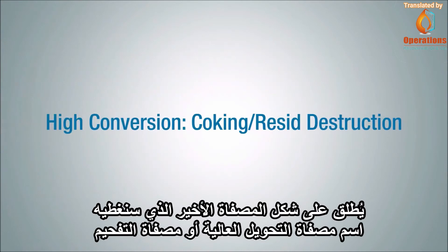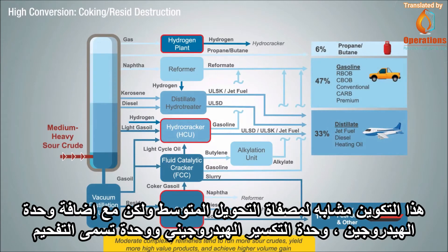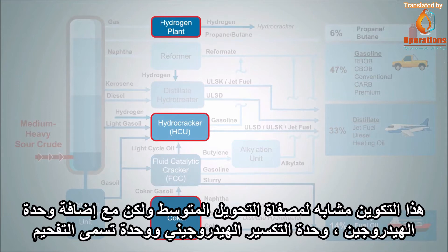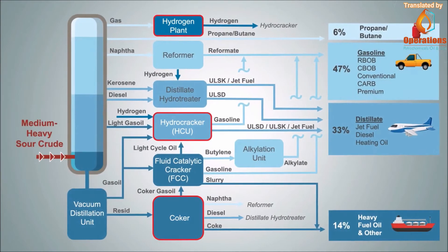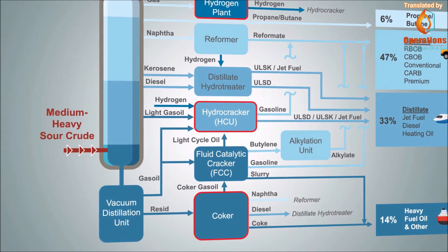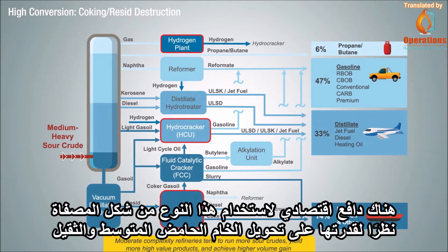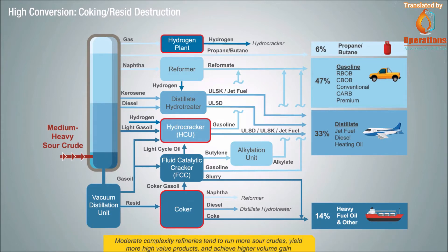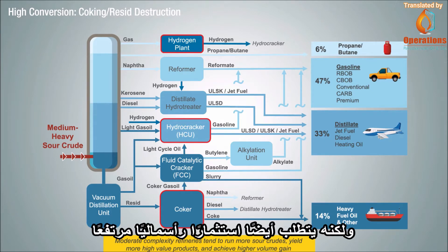The last refinery configuration we'll cover is called a high conversion or coking refinery. This configuration is similar to the medium conversion refinery, but with an added hydrogen plant, a hydrocracker, and a unit called a coker. With these additional units, a coking refinery typically processes medium and heavy sour crudes. There's an economic driver to utilize this configuration due to its ability to convert discounted medium and heavy sour crudes while still maximizing high value light product yields. This configuration typically generates the highest margins, but it also requires a high capital investment.